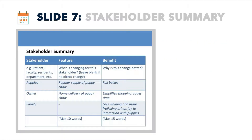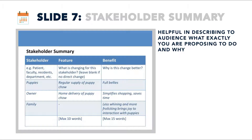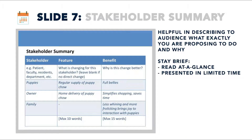Next is a summary table of stakeholders who are affected, the feature of the solution, and the benefit that the feature provides. This can be very helpful in describing to the audience what exactly you're proposing to do, why it is going to help, and who it is going to help. Keep it simple, not too data-rich. This should read at a glance and be presented quickly.